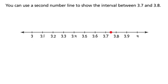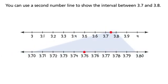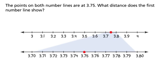You can use a second number line to show the interval between 3 and 7 tenths. The points on both number lines are 3 and 75 hundredths.